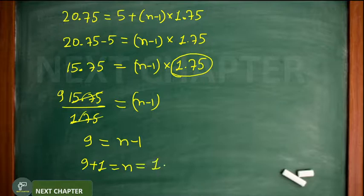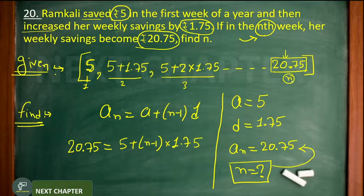If you shift minus 1, it becomes 9 plus 1, and the value of n will be 10. So n means in the 10th week, in the tenth week, her savings will be 20.75. This value belongs to which week? The 10th week.